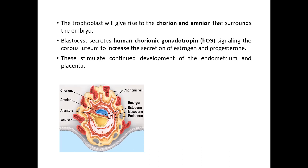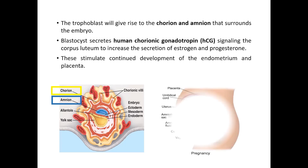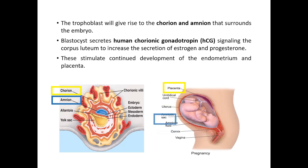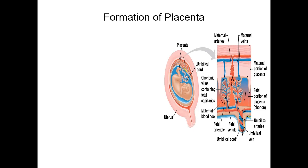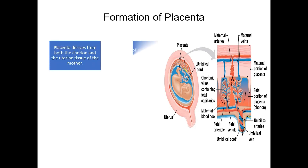The trophoblasts give rise to the chorion and amnion that surround the embryo. Chorion will develop into the placenta. Amnion will develop into the amniotic sac filled with amniotic fluid, which cushions the embryo. The blastocyst secretes human chorionic gonadotropin (hCG) hormone, signalling the corpus luteum to increase the secretion of estrogen and progesterone, stimulating continued development of the endometrium and placenta. The formation of placenta is derived not only from the chorion but also from the uterine tissue, and it is the important organ of exchange between mother and embryo, separated by a membrane.